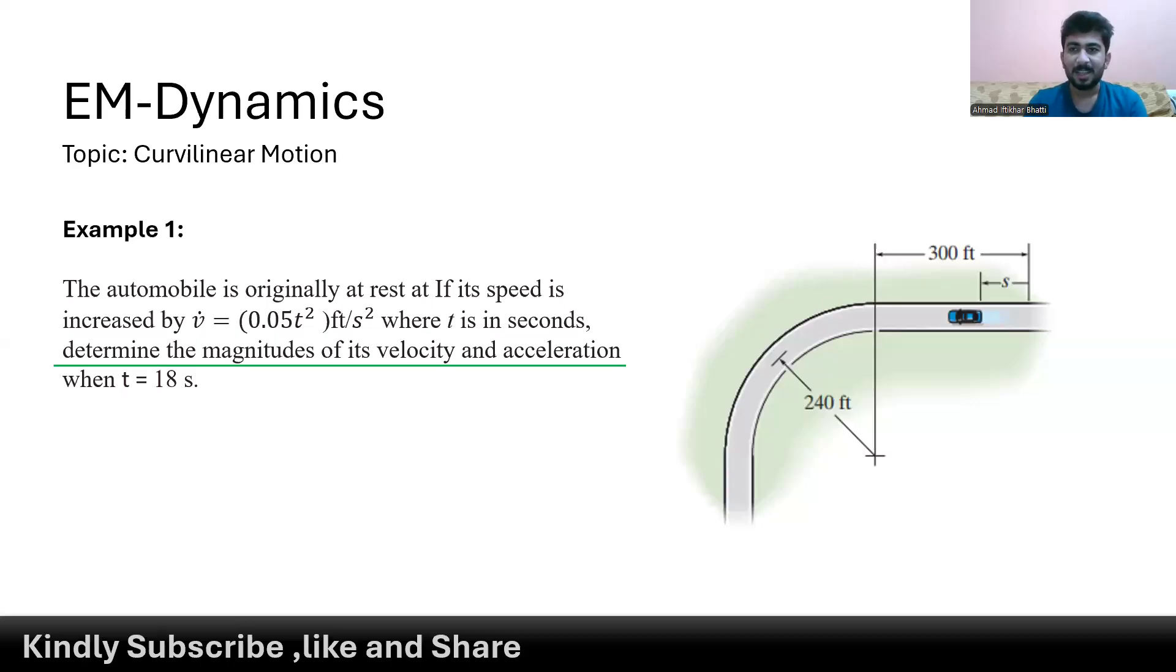In this problem we are given an automobile that is originally at rest. Its speed is increased by the acceleration 0.05t² feet per second squared, where t is in seconds. We have to find the magnitude of its velocity and acceleration when the time is about 18 seconds.